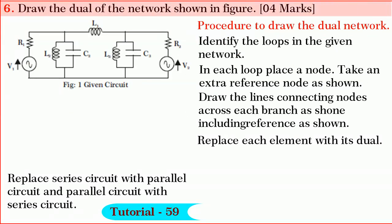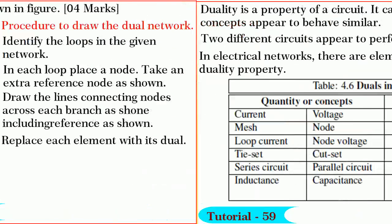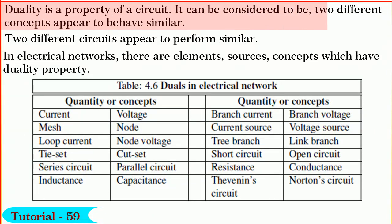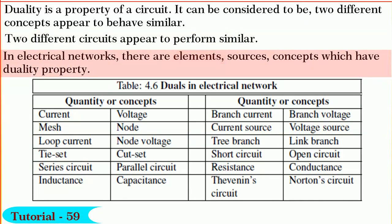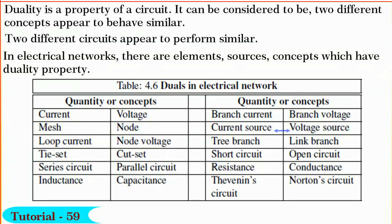Next we shall answer Question 6. In this question, we are required to draw the dual of the given network. Duality is a property of a circuit — two different concepts appear to behave similarly, or two different circuits appear to perform similarly. In electrical networks, there are elements, sources, and concepts which have duality property. For example: current is a dual of voltage, mesh is a dual of node, voltage source is a dual of current source, G is a dual of R, and C is a dual of L and vice versa.